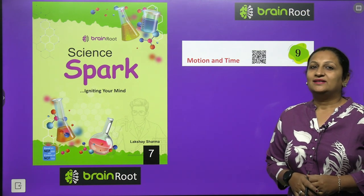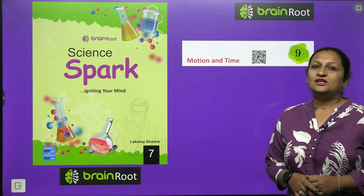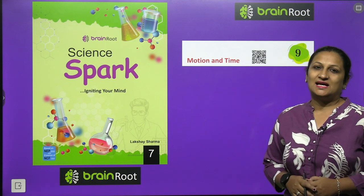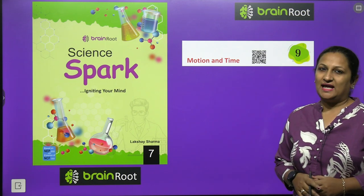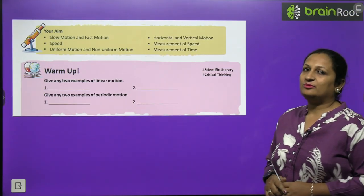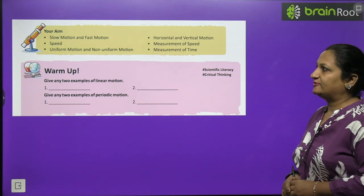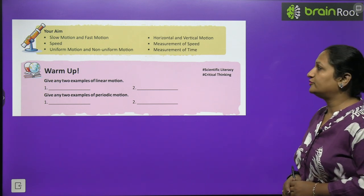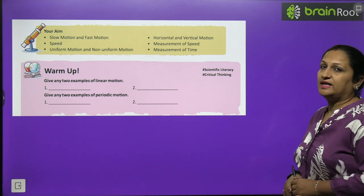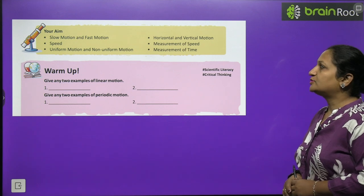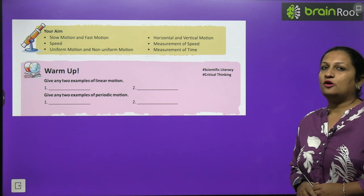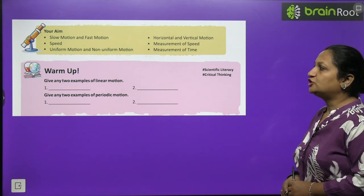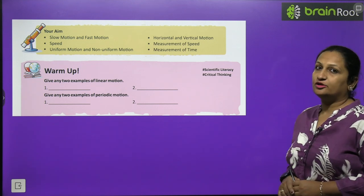Hello, dear children. Let's begin Chapter 9 of Class 7 Science: Motion and Time. The main topics of this chapter are slow and fast motion, speed, uniform motion, non-uniform motion, measurement of speed, and measurement of time. Have a look at the warm-up: give any two examples of linear motion.